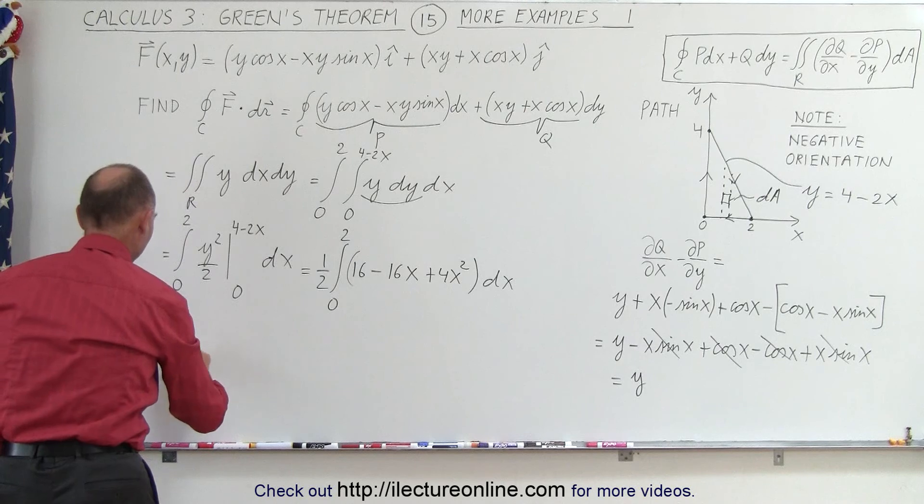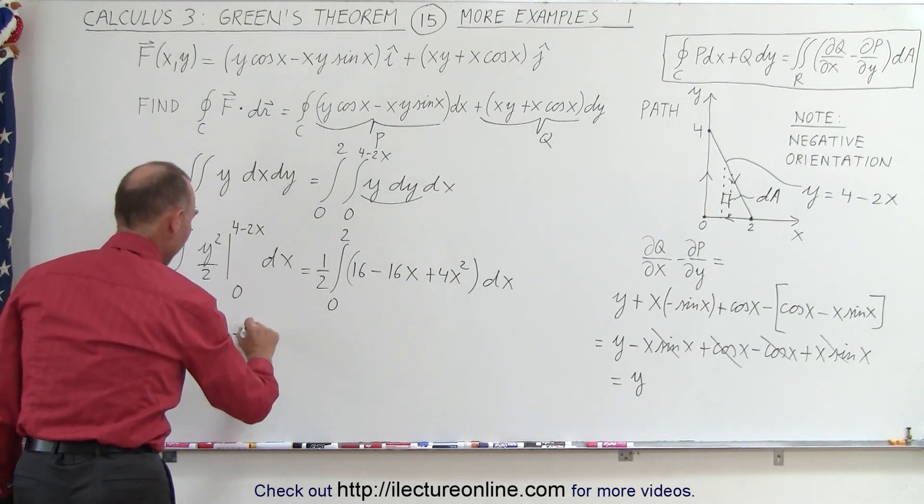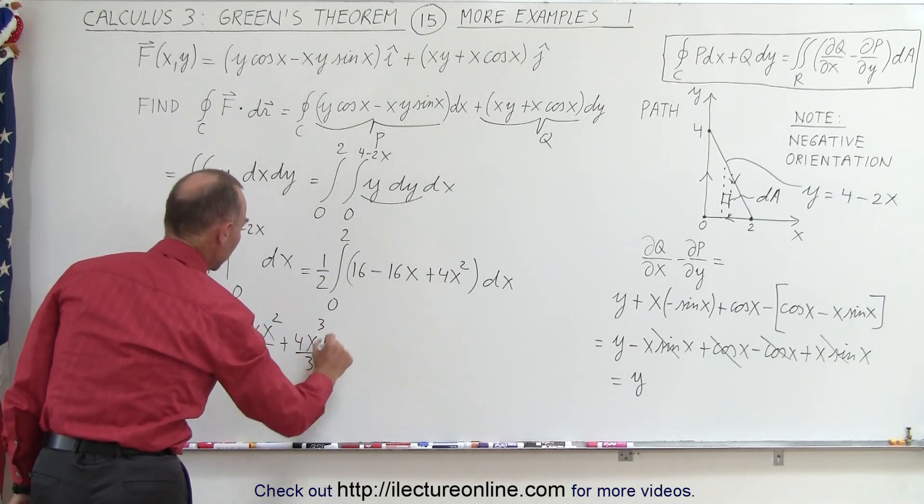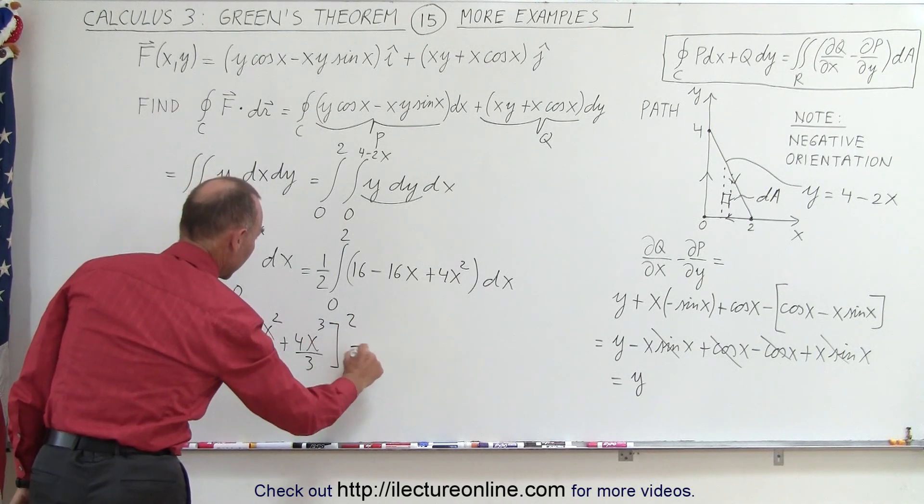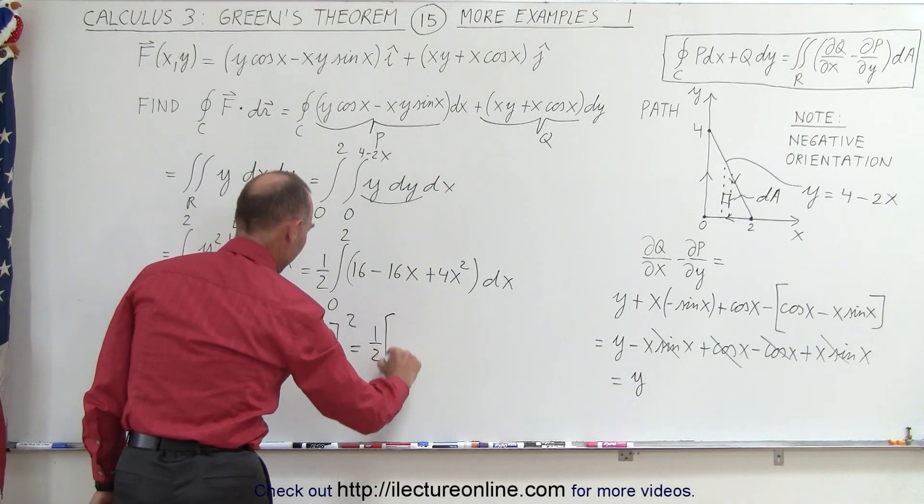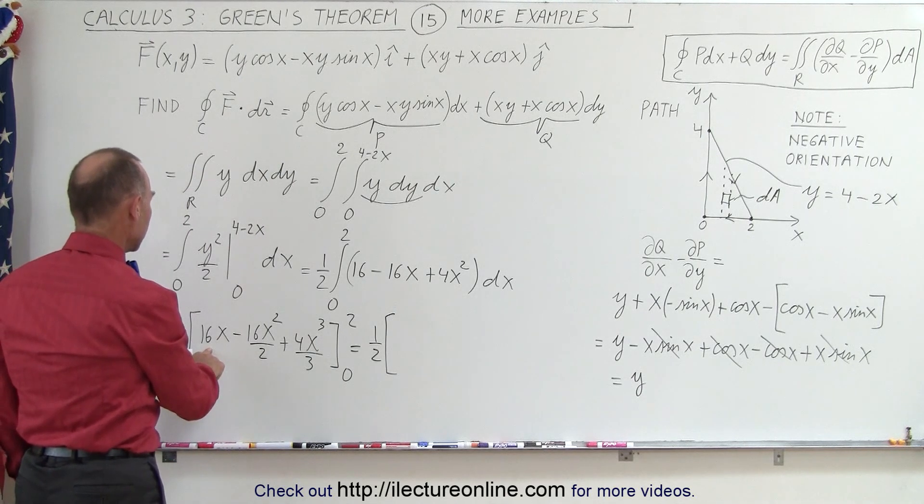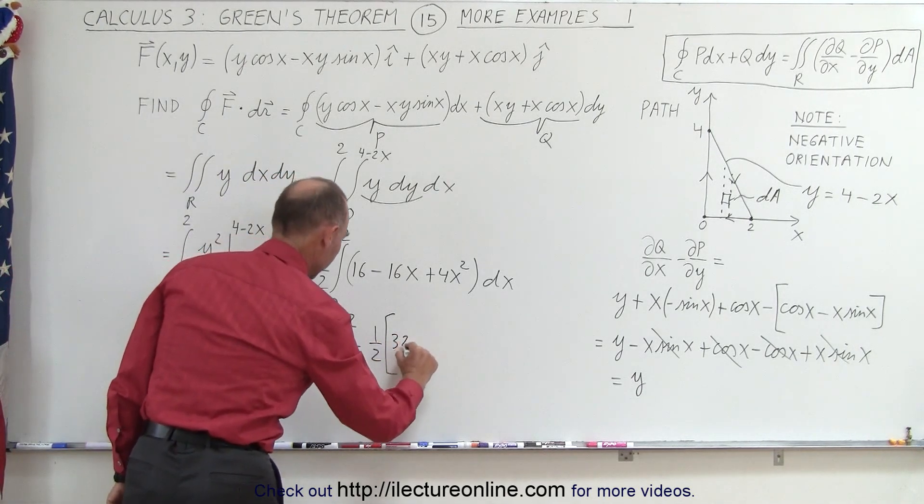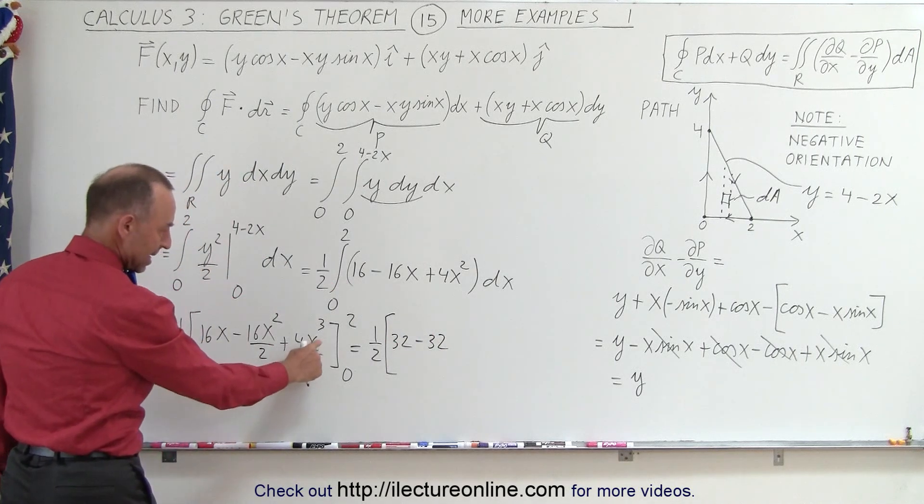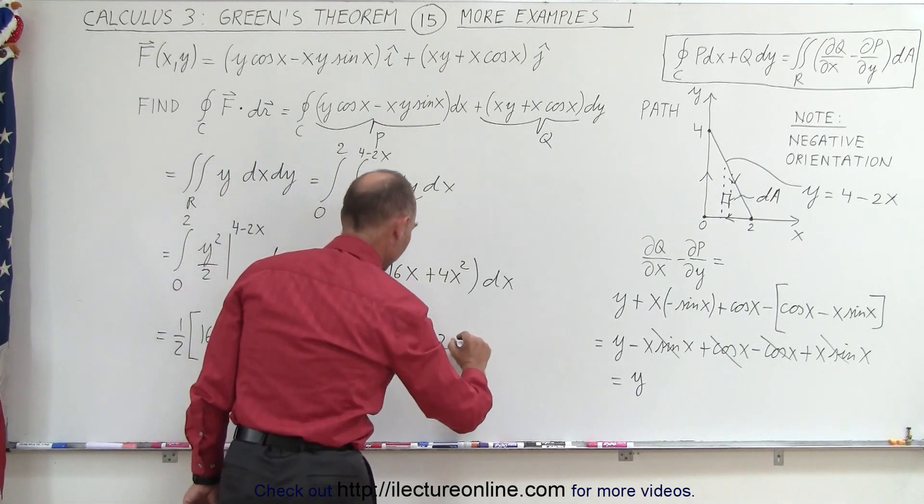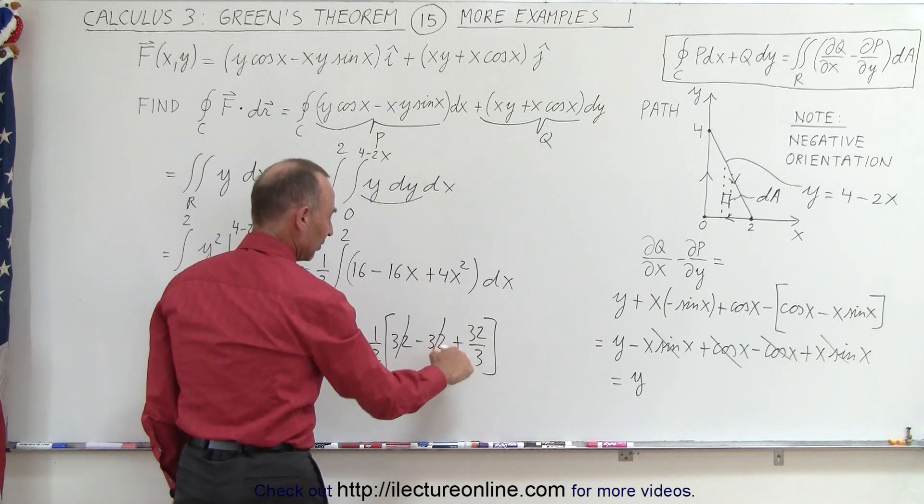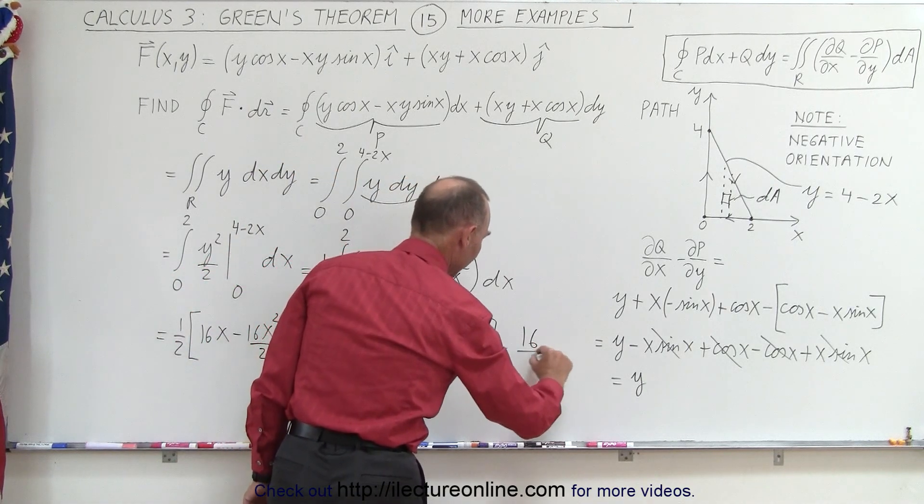So this is equal to 1 half times. That gives us 16X minus 16X squared over 2 and plus 4X cubed over 3. Evaluated from 0 to 2. And you can see here that I'm going to plug in the lower limit. We get nothing. All we have to do is plug in the upper limit. So this is 1 half times 16 times 2. That's 32. And here we have 4 divided by 2 is 2 times 16. That's minus 32. That cancels out nicely. And that's 8. That's 32 divided by 3. So that's plus 32 divided by 3. And of course, these two cancel. And 1 half times 32 is 16. So this gives us 16 divided by 3.